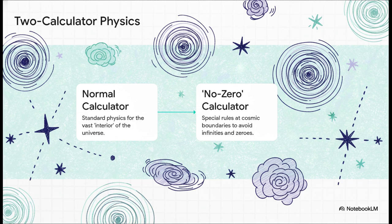For almost everything in the universe, it uses the normal calculator, the standard laws of physics we all know and trust. But for those cosmic extremes, like the moment of the Big Bang, where our current math gives us a division-by-zero error, it switches to a special calculator, one with built-in rules that simply don't allow infinities to happen, keeping the equations totally sane.